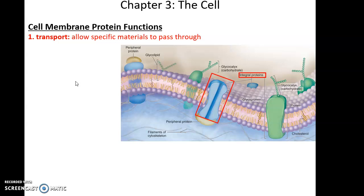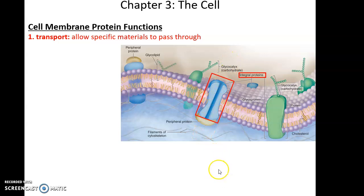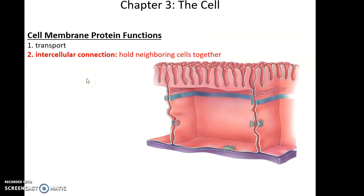Cell membrane proteins are very important and have many different functions. One function is transportation: transmembrane proteins can provide a channel to allow materials to cross the cell membrane that normally cannot cross it. Cell membrane proteins can also serve as structures for intercellular connections — proteins in the cell membrane of one cell can attach to proteins in adjacent cells and hold those cells together.